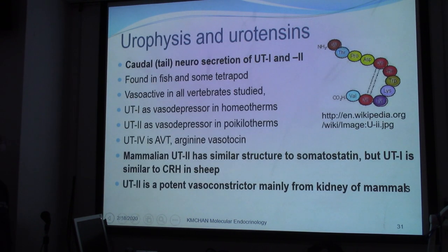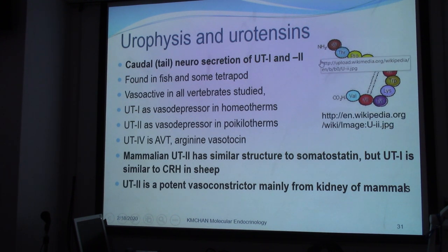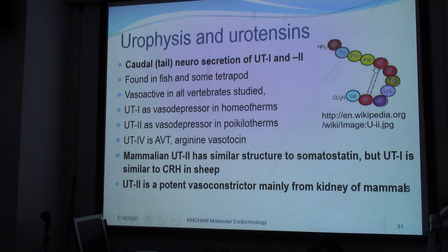We also need to look into what we call the urophysis — the gland in the tail, which we call the caudal neurosecretory system. We have the urotensins: UT1 and UT2. They are found in fish and some tetrapods — animals with four legs — and they have very active effects in all vertebrate studies, including humans. They have a similar but not identical structure with an N-terminal and C-terminal. The urotensins are not amidated, and the disulfide loop is not formed from the first and sixth amino acid positions.